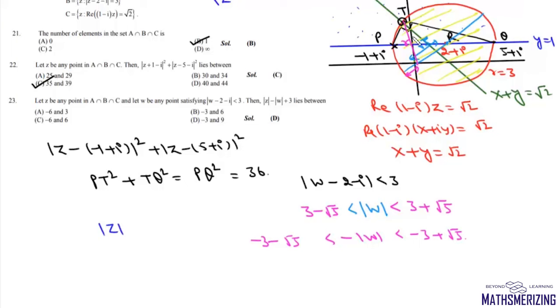Now for this mod z it lies on the same circle but on the positive side when the value of y is greater than or equal to 1. So this mod z will be less than maximum value of modulus on this circle which is 3 plus root 5 and it will be greater than this distance and this distance is root 2. So it will be greater than root 2 but less than 3 plus root 5.